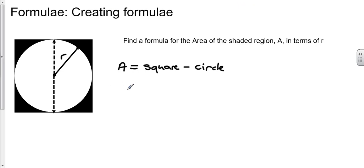So for our square we can deduce that the area of the square will be 2r times 2r. Now for a circle you should remember that the area of a circle is pi r squared, and so we're going to take away pi r squared because we don't want the circle to be included in the area we're finding.